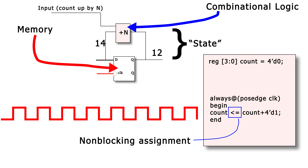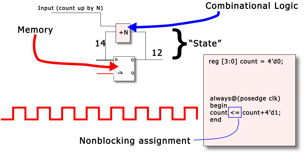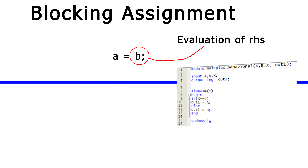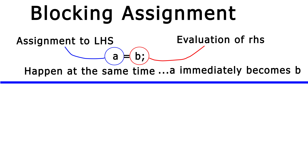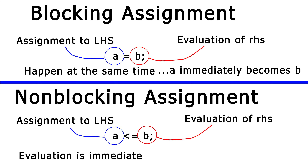Look at this symbol — this is called the non-blocking assignment, and it's different from the blocking assignments used previously. Using non-blocking assignments, the circuit will be synthesized in hardware as sequential logic. With a blocking assignment, evaluation of the right-hand side and assignment to the left-hand side happen at the same time — immediately. But with the non-blocking assignment, there is separation: the right-hand side is evaluated immediately, but assignment to the left-hand side is delayed until all other right-hand side evaluations are completed in that particular time step.